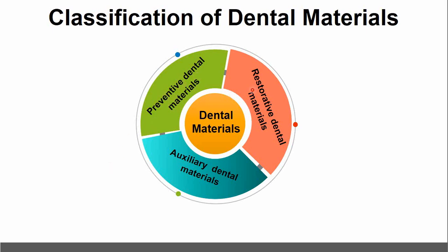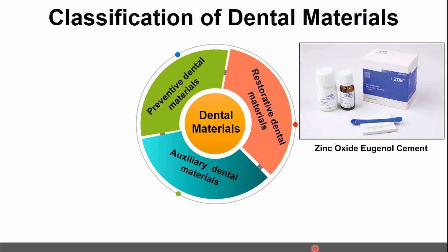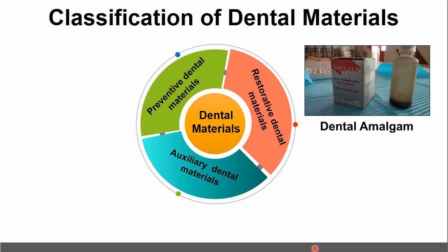The second type is restorative dental materials. Restorative dental materials include dental cements, for example glass ionomer cement and zinc oxide eugenol cement, or dental amalgam.